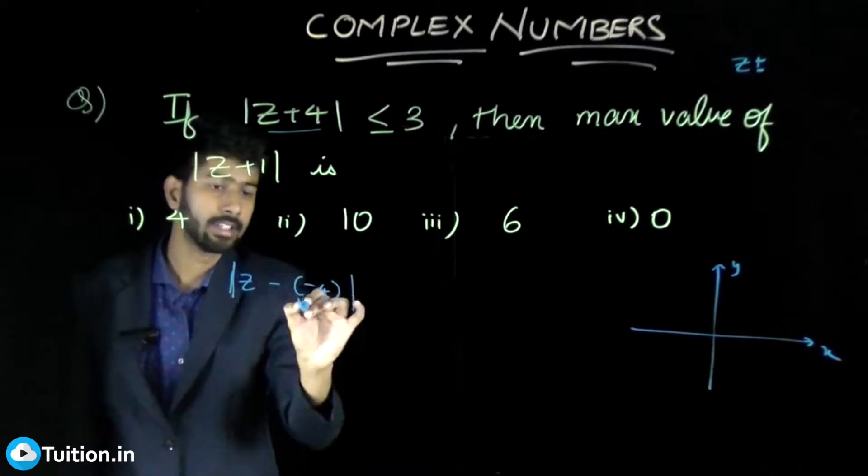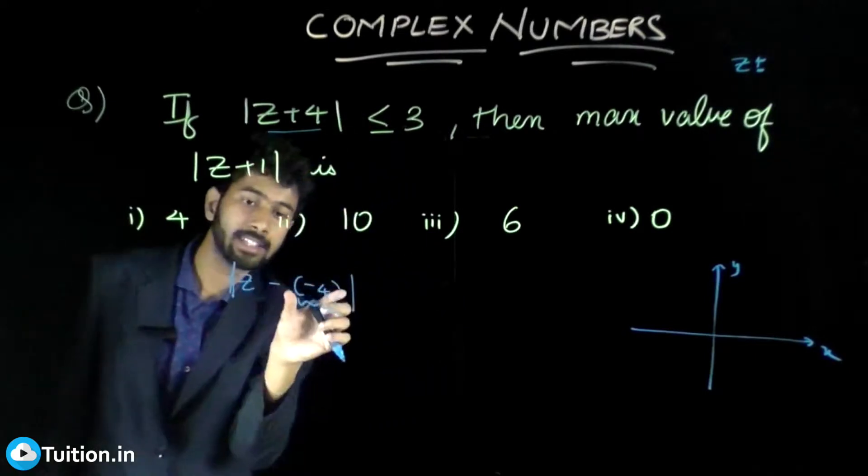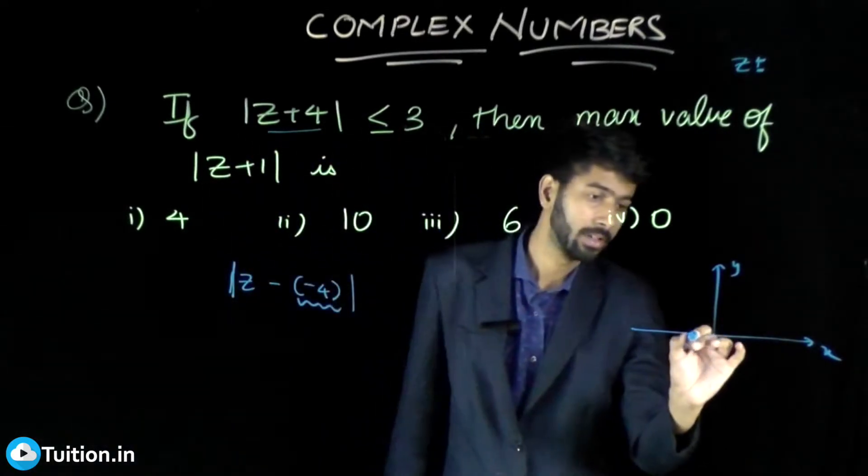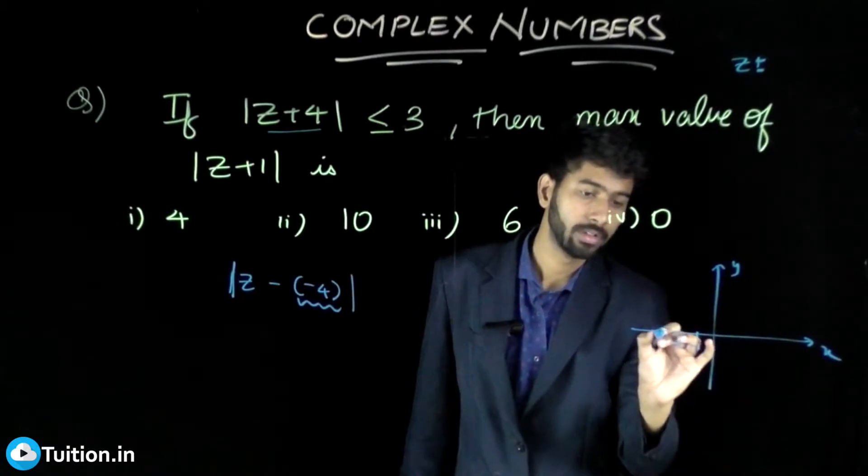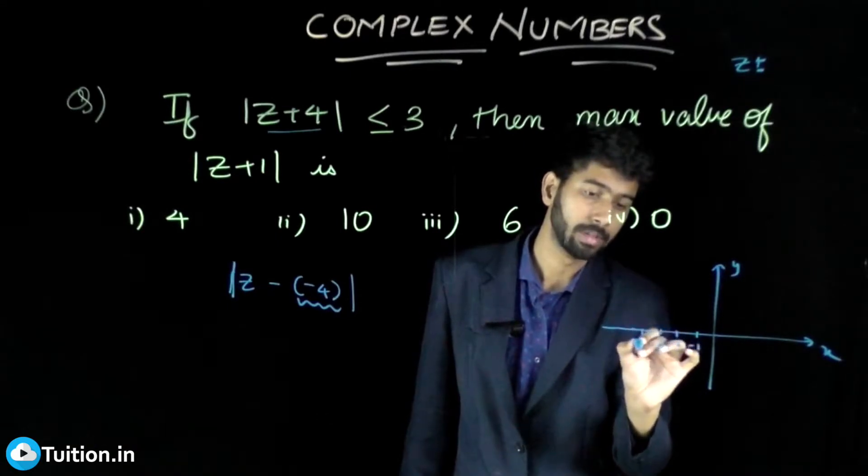Mod z plus 4 actually means mod of z minus (-4). So this is a complex number minus 4. z minus that complex number is the distance between z and that complex number. So you have minus 1, minus 2, minus 3, and you have minus 4.